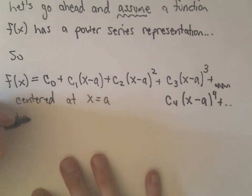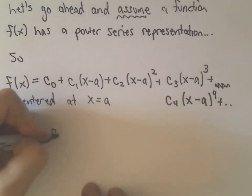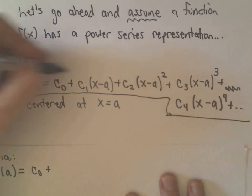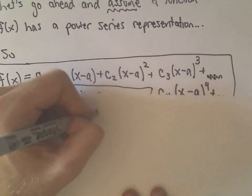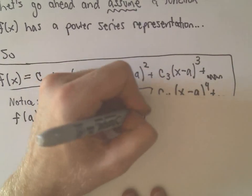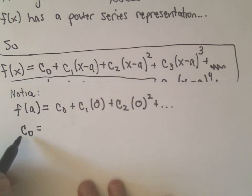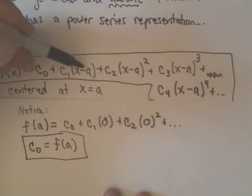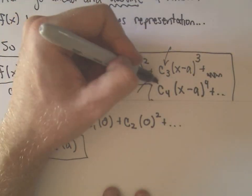We won't use a derivative at the beginning. Notice if I plug in the value a — which is where I'm centering it — into the power series expansion, everything else gives zeros: C₁ times (a minus a) is zero, C₂ times (a minus a) squared is zero, and so on. Everything cancels out except C₀. So to get C₀, just plug a into the original function: C₀ = f(a). The only thing we're really trying to figure out are the values of these constants.